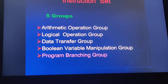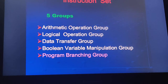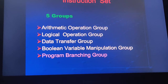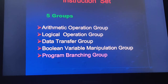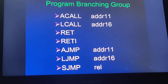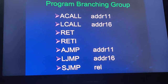The last group is the program branching instructions. Normally instructions are executed in sequence, but during a branch instruction, execution transfers from the current memory location to some different memory location. Let us discuss those branching instructions. There are two types of calls: long call and absolute call.